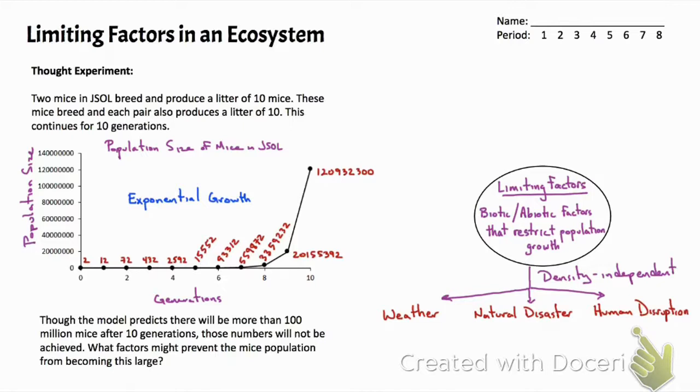In other words, these particular factors' effects would not depend on the number of organisms in a population per unit area. There are three examples: weather, natural disaster, and human disruption.